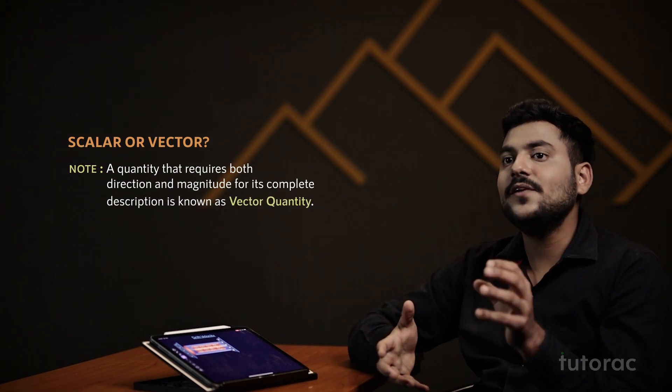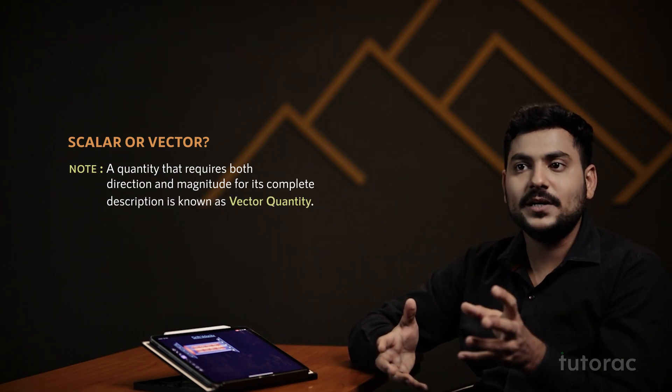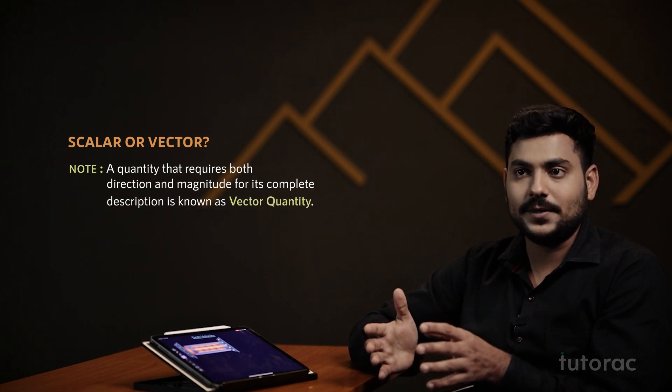How should we categorize electric current — as a scalar or as a vector? Before moving further, we should understand what these two properties are. Whenever we are defining a new property, if we require both the direction as well as the magnitude to completely define it, then we call that particular property a vector quantity.